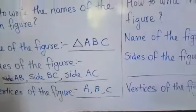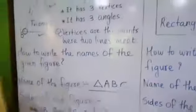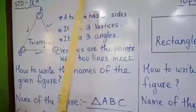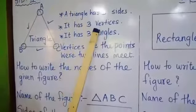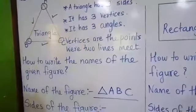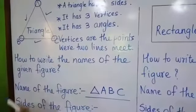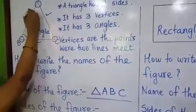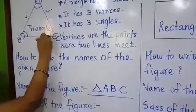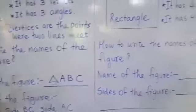To repeat: it is a triangle. It has three sides, three vertices, and three angles. Angles are at the vertices — we are going to learn more about angles in the next chapter.